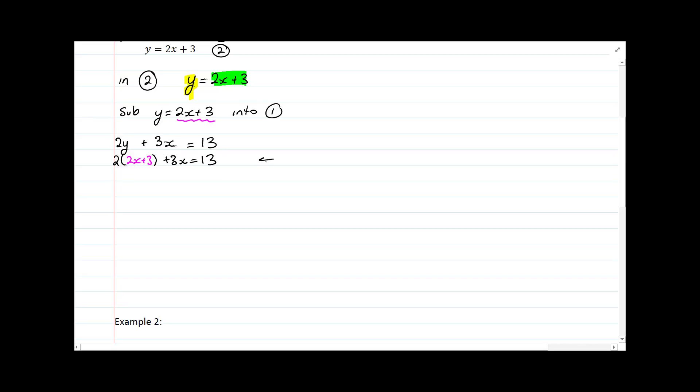And now this is an equation, and I can solve that equation because it's just an x. So I'm going to go ahead and solve that equation. Expanding first gives me 4x plus 6 plus 3x equals 13. Subtracting 6 will give me 7x equals 7, and dividing by 7 will give me x is equal to 1. So I've got the first part of my solution.